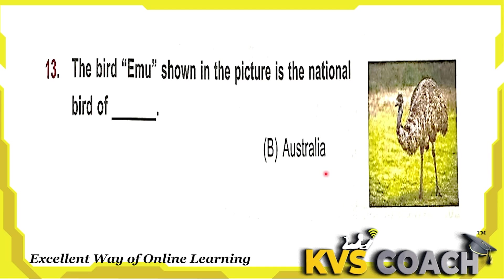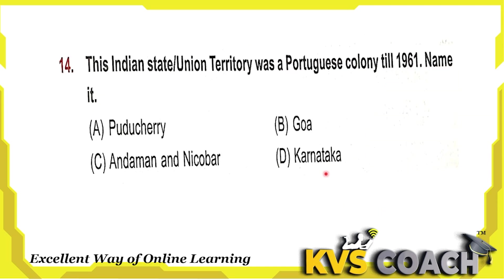Next question: this Indian State or Union Territory was a Portuguese colony until 1961. Name it. Option A is Pondicherry. Option B is Goa. Option C is Andaman and Nicobar. Option D is Karnataka. So the right answer is option B, Goa.